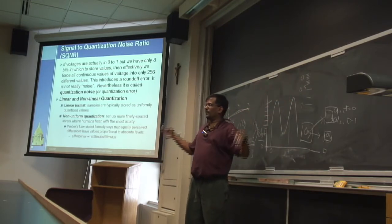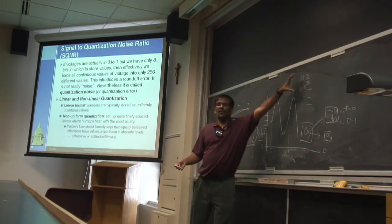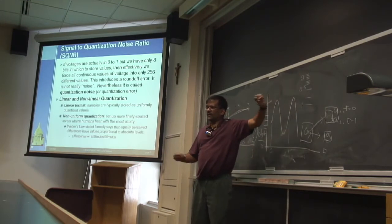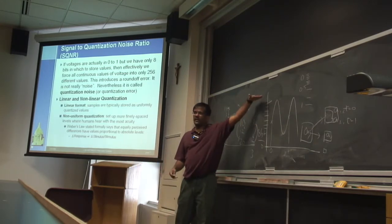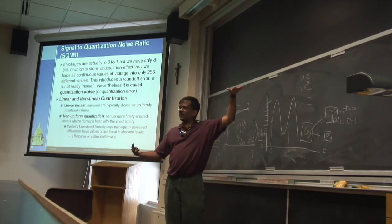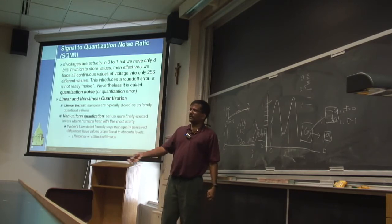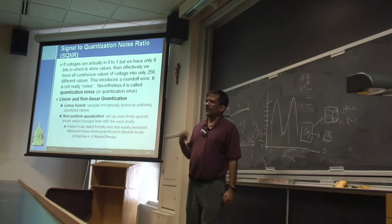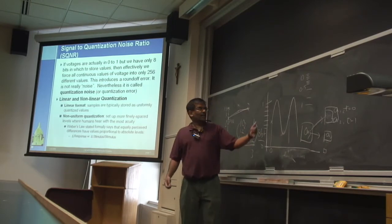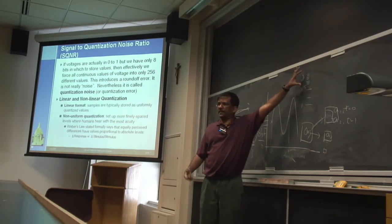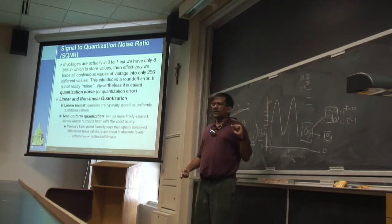For a given quantization level, you get output that sounds the same to you — because loud stuff doesn't have much perceived difference, and for quiet stuff you can't perceive the small differences you're dropping. In effect, it looks like you're quantizing at a higher level than you really are. Why not just use more bits? Because you're limited in how much data you can send over the network.